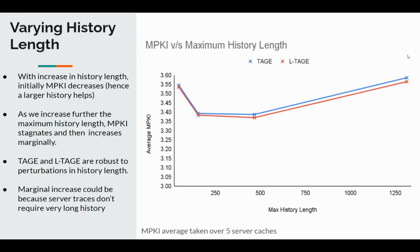When we vary the history lengths, we see that initially increasing history lengths decreases MPKI, but afterwards it starts increasing marginally. This marginal increase is probably because the server traces used in our experiments don't require very long histories for accurate predictions — if we start considering past events that don't affect the current prediction, that leads to mispredictions.